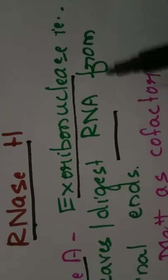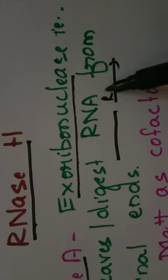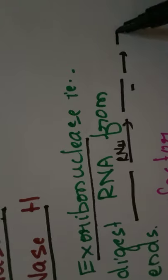For example, if we have an RNA like this and if we add RNase A, what it does is it will remove the RNA from its terminal end. Now it has removed one nucleotide from the end like this.